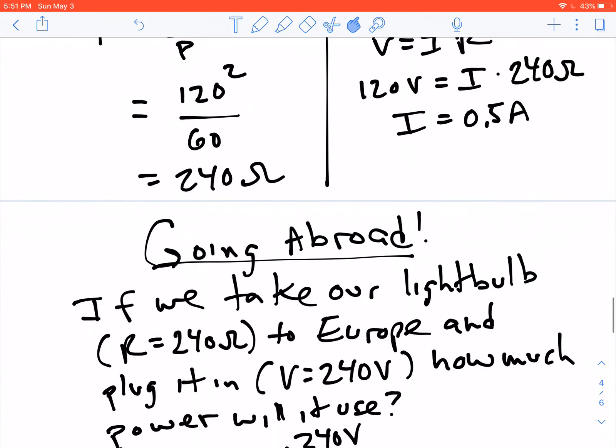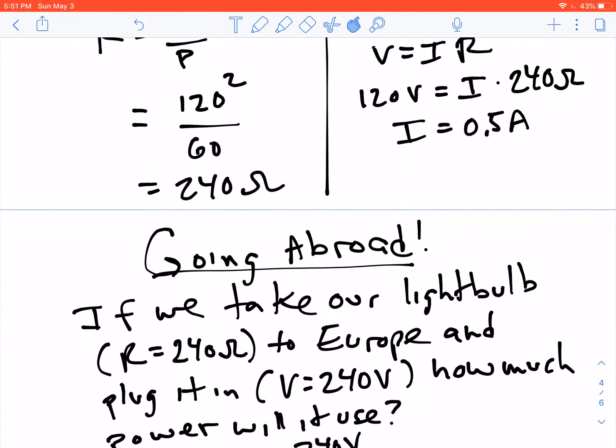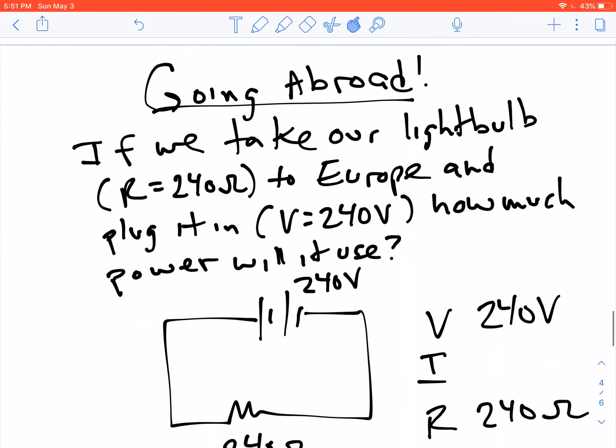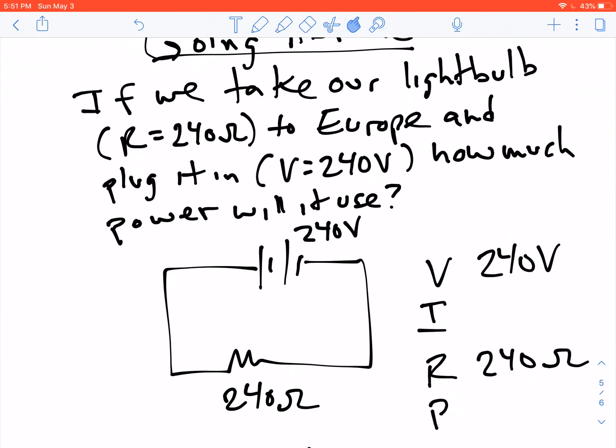Now, imagine that we were to go abroad. We went and took our light bulb to Europe. Our light bulb has a resistance of 240 ohms. We take it to Europe, and we plug it into Europe's power supply. In Europe, they have different plugs, and they have a different amount of voltage that comes out of the wall. And the question is, how much power will it use? If you've ever gone abroad and brought some electronic equipment with you, you may have had this experience. All right, so we have a 240 ohm resistor, and we connect it to a 240 volt power supply.